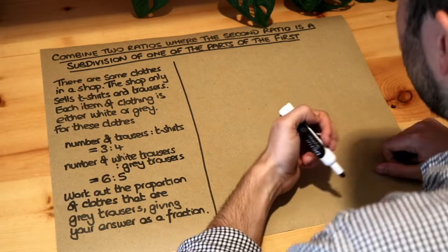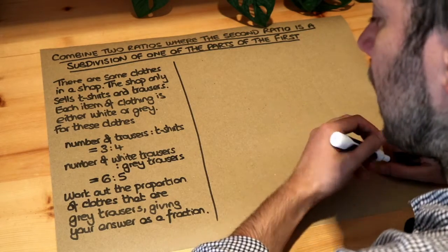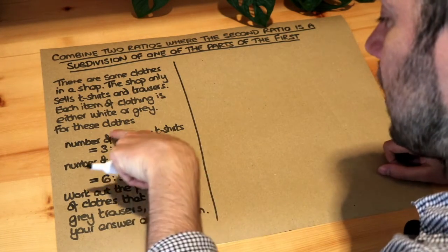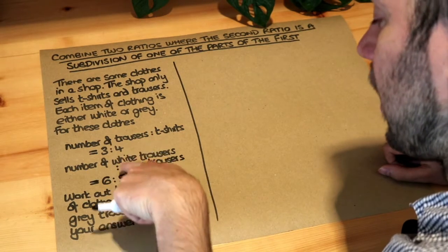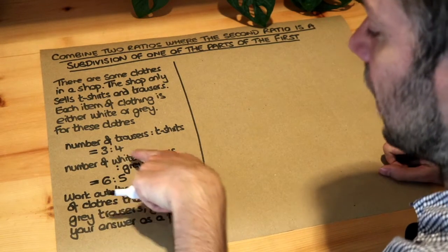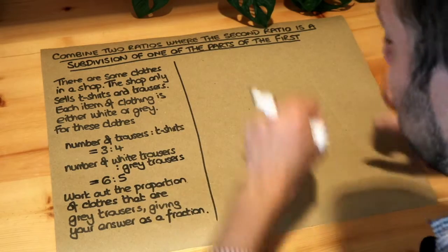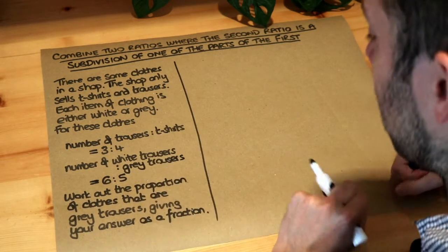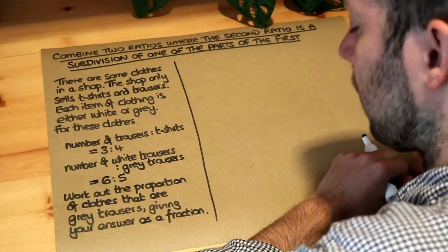Now the difference from previous questions in this skill is that we're actually subdividing the trousers in this ratio into something finer grained: white trousers to grey trousers. We're splitting up the trousers further into the different types of trousers, white or grey.